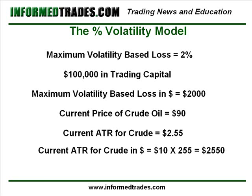That equates to an average true range in dollar amounts per contract. If you remember, a one cent move in the price of crude oil equals $10. So $10 times 255 equals $2,550, which is what the average true range is represented in dollar amount per contract. So the average true range for one contract of crude oil represented in dollars is $2,550.